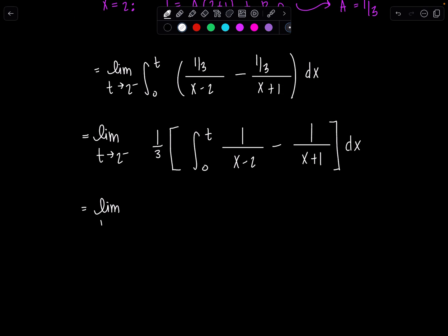Both of these we should be able to anti-differentiate, no problem. Limit T goes to 2 from the left, one third. We're going to have natural log absolute value x minus 2 minus natural log absolute value x plus 1. And then don't forget, we have to evaluate from 0 to T. Alright?